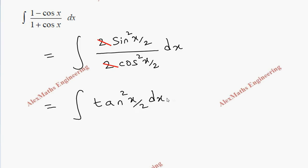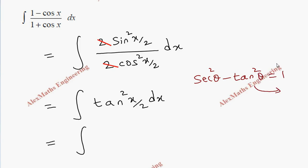We don't have a direct formula for the integration of tan squared x, so we use the identity: secant squared θ minus tan squared θ equals 1. Rearranging, tan squared θ equals secant squared θ minus 1.